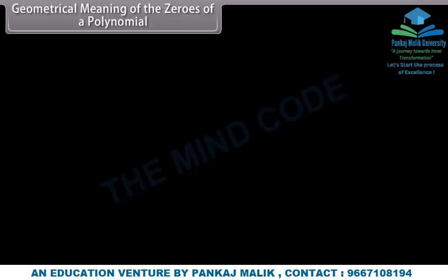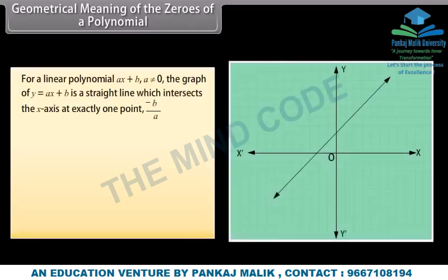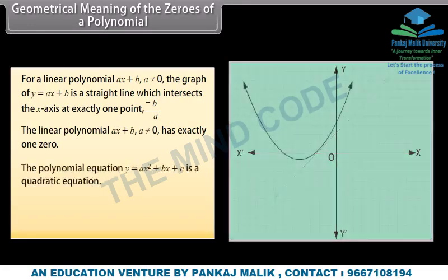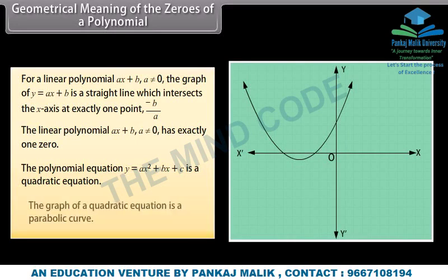For a linear polynomial ax plus b, where a is not equal to 0, the graph of y equals ax plus b is a straight line which intersects the x-axis at exactly one point, minus b upon a. Therefore, the linear polynomial ax plus b has exactly one zero. The polynomial equation y equals ax squared plus bx plus c is a quadratic equation, and the graph of a quadratic equation is a parabolic curve.